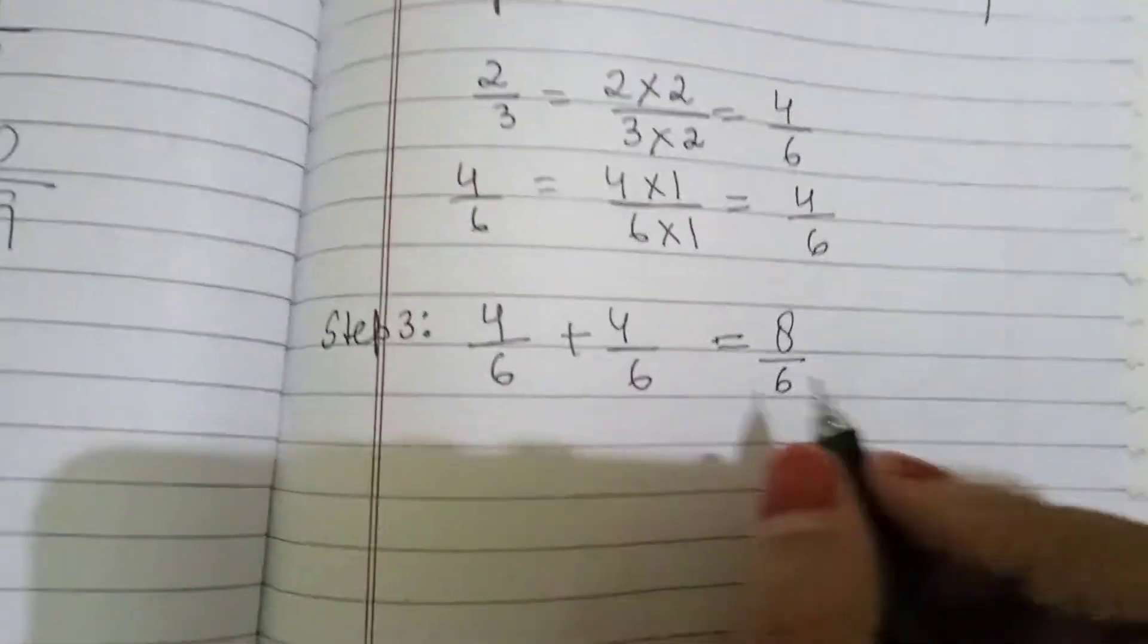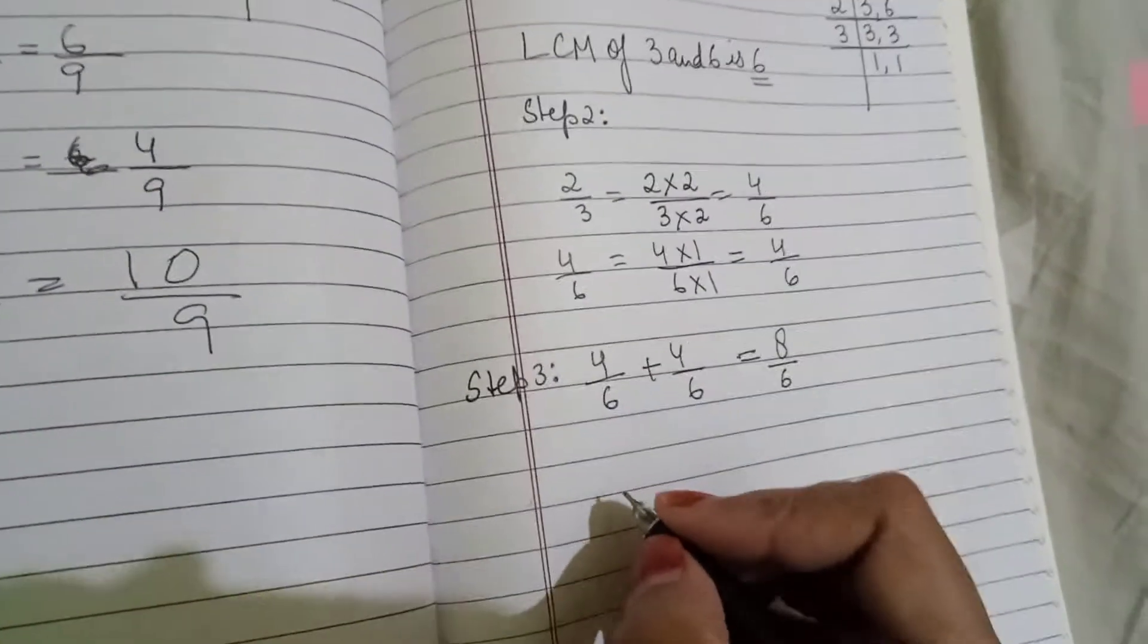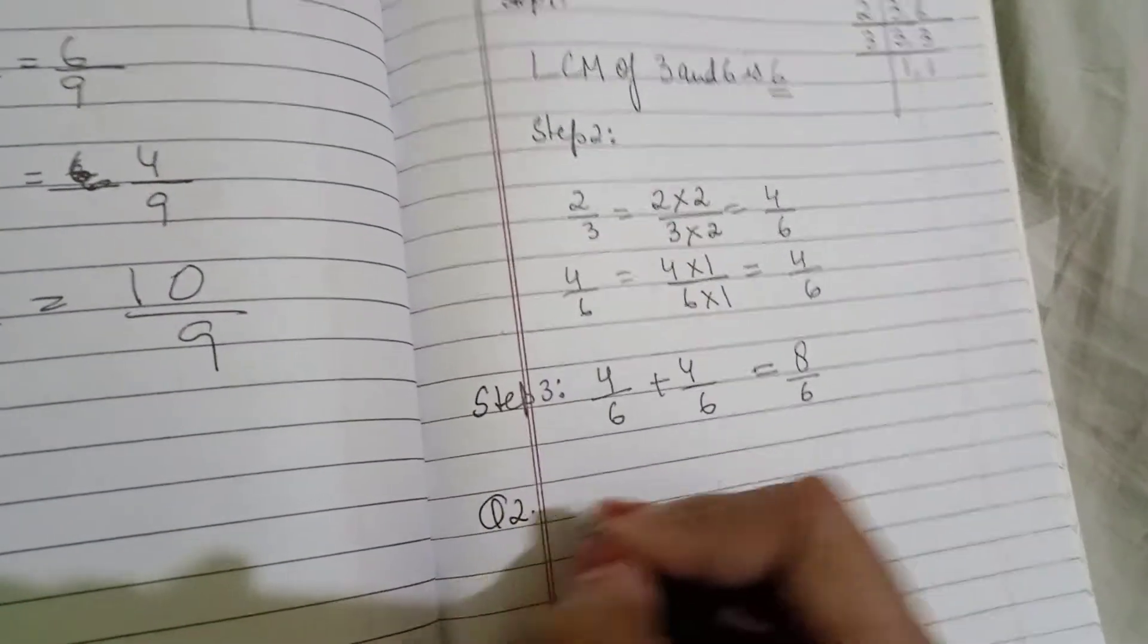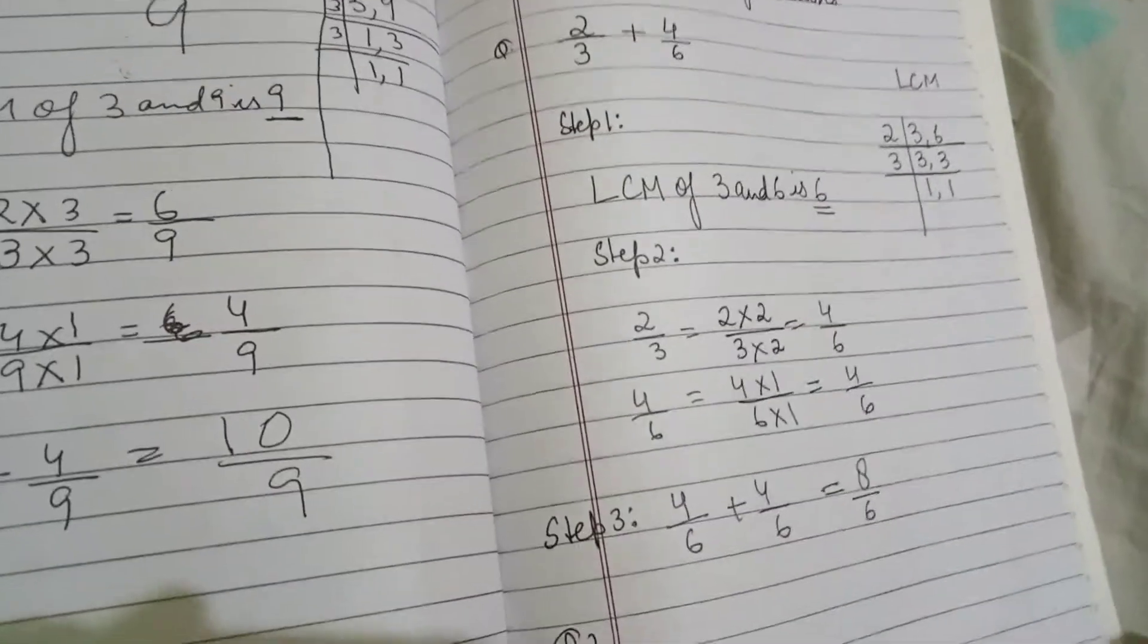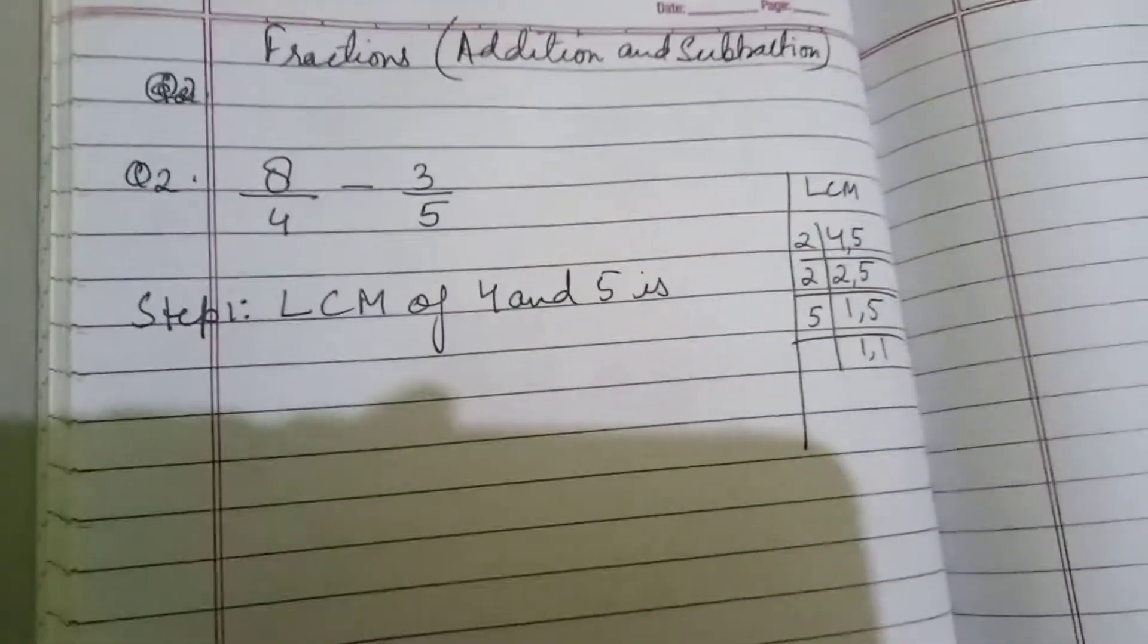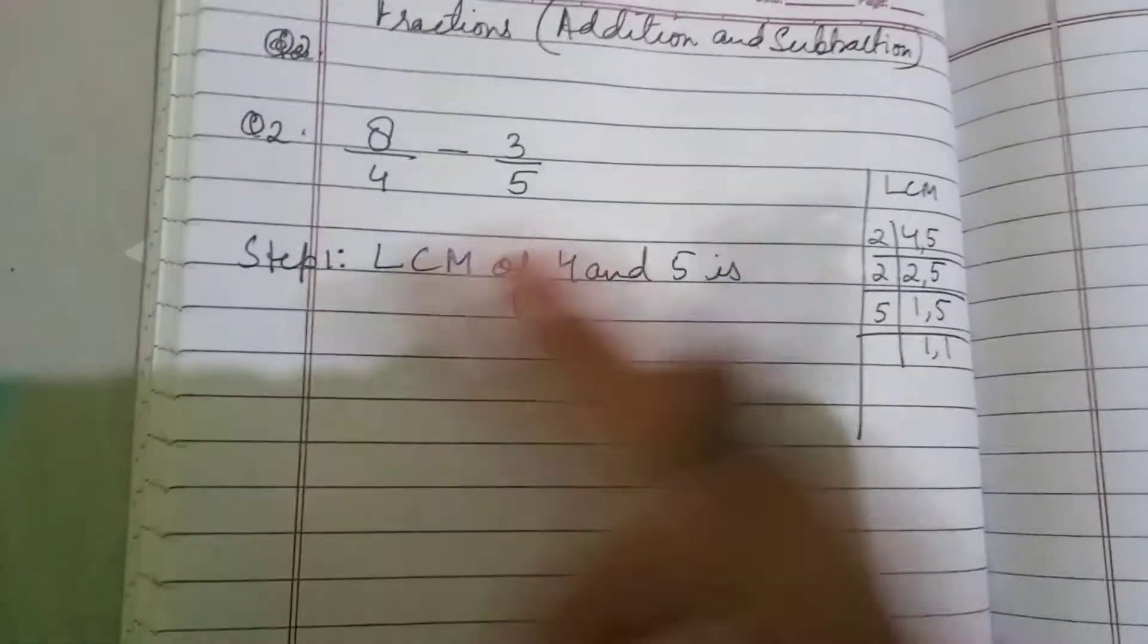So, 4 plus 4 is 8 upon 6. We never add the denominators. We only write as it is. Now, let us take question number 2.